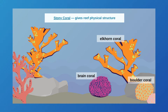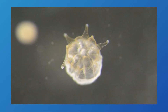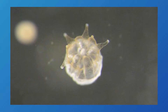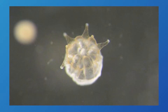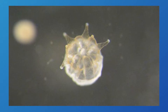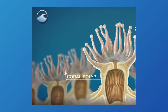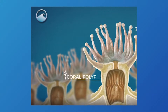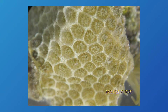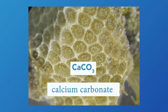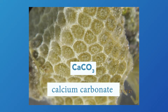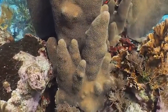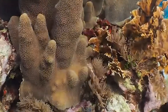First, stony corals or hard corals are what create the foundation of the reef. A reef is started when the free-swimming coral larvae attach to hard surfaces along the edges of islands or continents and start to grow. These tiny animals are called coral polyps and they create tiny stone skeletons to live in. They take calcium carbonate — the same mineral that makes up chalk and shells — from the water to form the mineral skeleton.